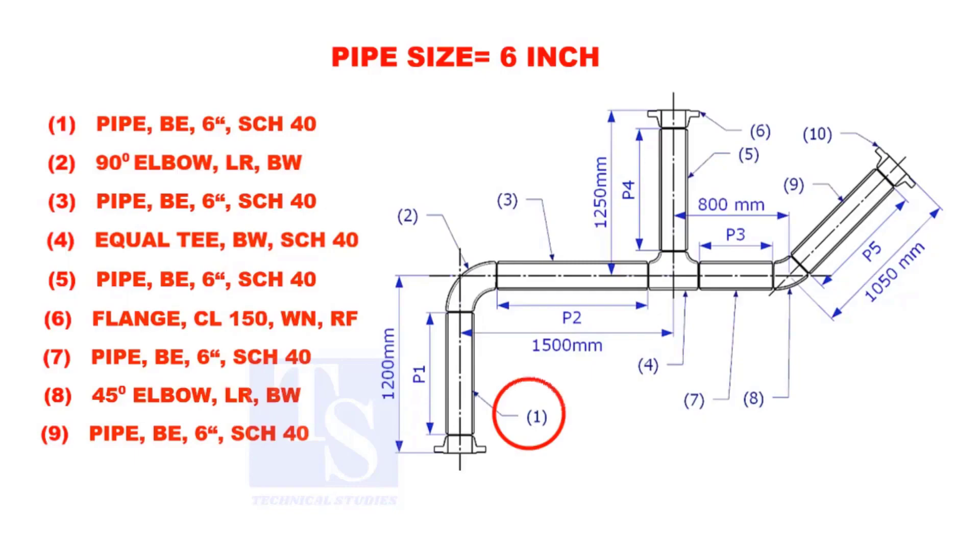Let us calculate the length of pipe 1. To calculate the length of pipe 1, we need to reduce the flange height and the elbow center from the measurement 1200mm.